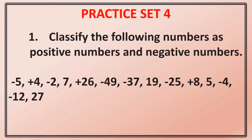Now we will start Practice Set 4. Classify the following numbers as positive numbers and negative numbers. Here we have to show which numbers are positive and which are negative. The numbers given are: minus 5, plus 4, minus 2, 7, plus 26, minus 49, minus 37, 19, minus 25, plus 8, 5, minus 4, minus 12. When numbers don't have any sign, they are positive.